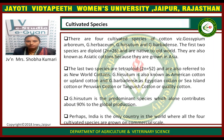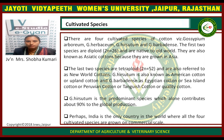Cultivated species of cotton. There are four cultivated species of cotton: Gossypium Arboreum, Gossypium Herbaceum, Gossypium Hirsutum, and Gossypium Barbadense. The first two species are diploid and are native to the Old World. They are also known as Asiatic cotton because they are grown in Asia. Gossypium Arboreum and Gossypium Herbaceum are also known as Old World Cotton or Asiatic cotton.